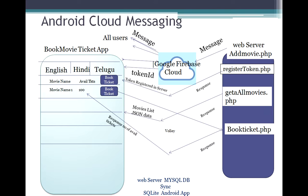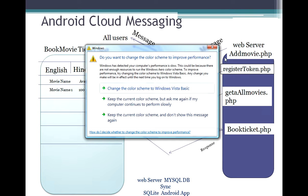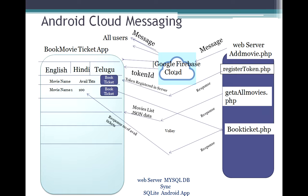We have taken a small piece of a book movie ticket requirement to explain how to sync data between a web server and an Android app. In the initial setup session, we saw that when a user installs the app, Google Firebase Cloud generates a token ID for the user and sends it back to the app. The app then sends this token ID to the server by calling registerToken.php, which updates the database and sends back a response confirming the token is registered.